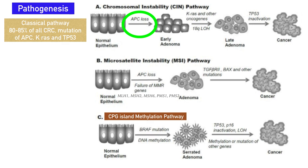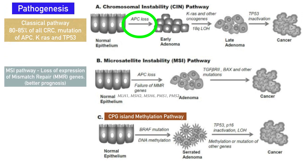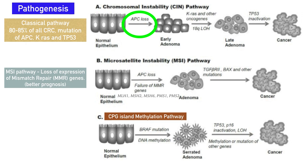Mutation of TP53, a tumor suppressor gene, causes uncontrolled cell entry and subsequently causes cancer. The second pathway is due to loss of the DNA repair mechanism, called the microsatellite instability pathway or MSI pathway. This is due to loss of expression of mismatch repair genes (MMR genes), which subsequently causes APC gene loss, adenoma formation, and further gene mutations that can cause cancer.